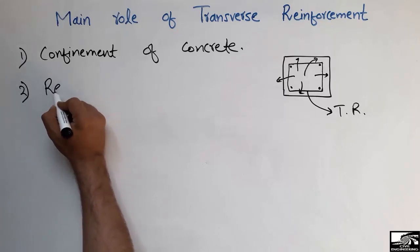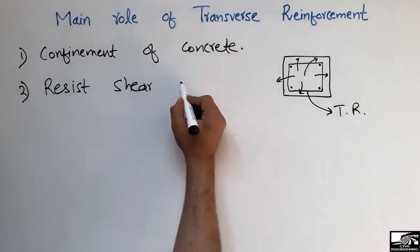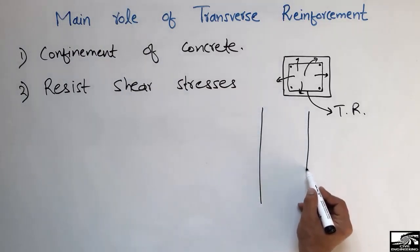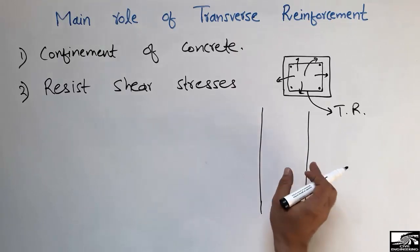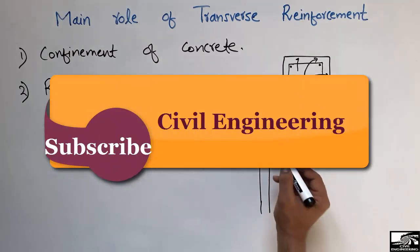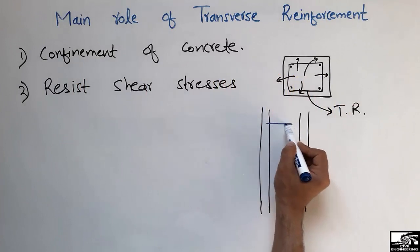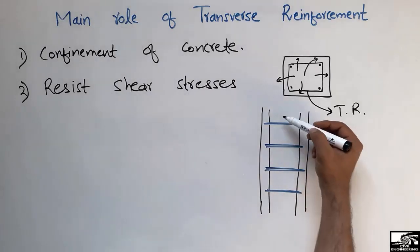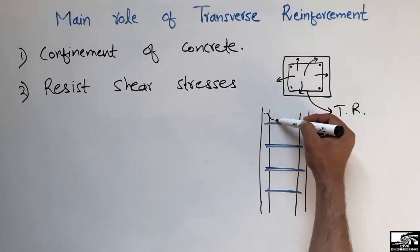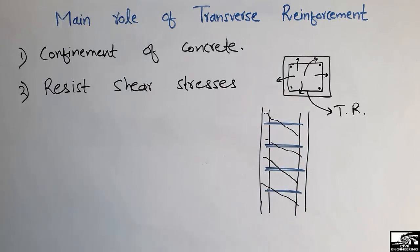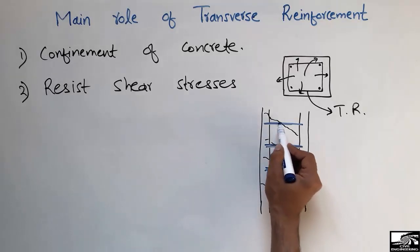The second purpose is that transverse reinforcement resists shear stresses. Considering a column in elevation, with longitudinal bars, we provide the transverse reinforcement in the lateral direction. Cracks usually occur diagonally in the concrete column due to shear stresses. The transverse reinforcement resists and stops these shear cracks.